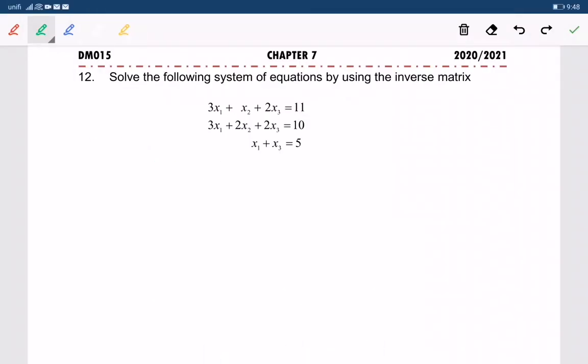Question number 12. Solve the following system of equations by using the inverse matrix. So we have three linear equations with three unknowns, which is x1, x2, and x3. But in the beginning, we will transform these three linear equations into the form of AX equals B.